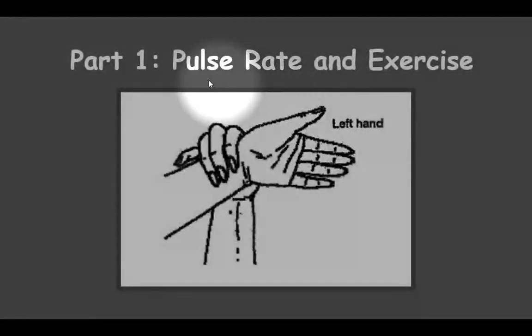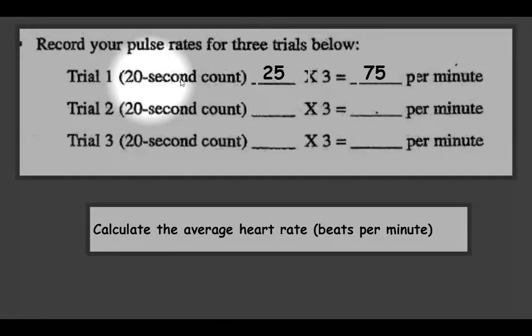So the first thing that we do in the lab is we get the pulse rate. The pulse rate is taken at rest and then also after exercise. When we get the pulse rate, we do it for 20 seconds because 20 seconds is one-third of a minute and it just saves time.